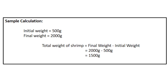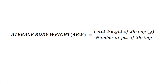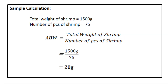For example, the initial weight is 500 grams and the final weight is 2000 grams. Getting the difference between the two, we get 1500 grams. Now that we have the total weight of shrimp, we can compute for ABW using the formula: average body weight equals the total weight of shrimp in grams divided by the number of shrimp. For example, 1500 grams divided by the total number of shrimp sample, which is 75, gives us an ABW of 20 grams.